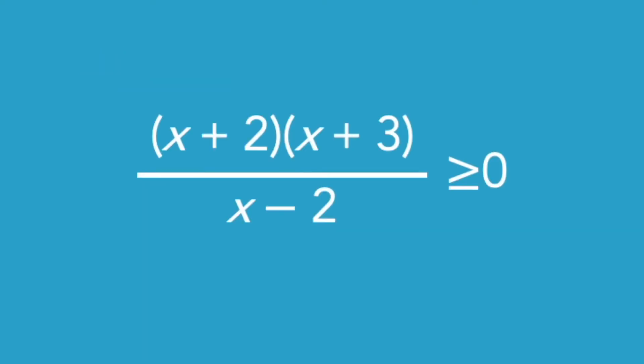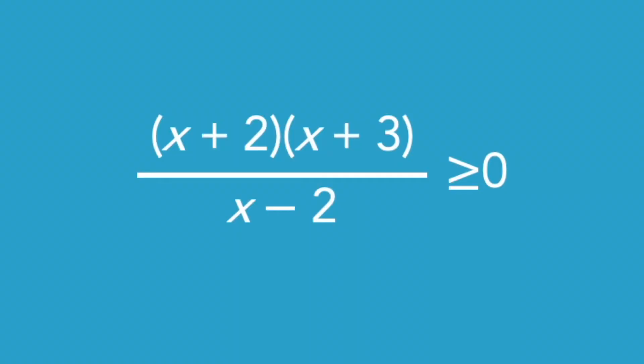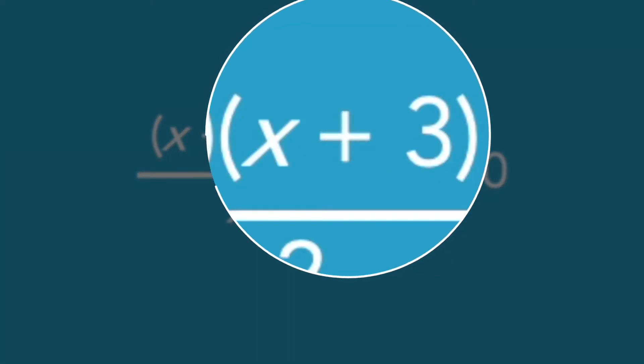Now we're told that this expression is at least zero, so I wonder under what circumstances would it be exactly zero? This ratio will be zero as long as the numerator is zero, and the numerator will be zero as long as at least one of those factors is zero. So under what circumstances would those factors be zero? Either where x is negative 2 or where x is negative 3. So those are two solutions already.